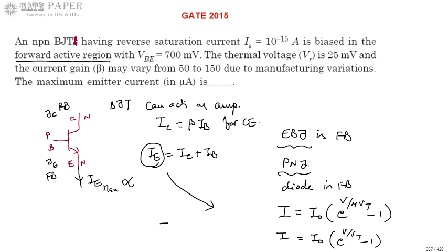This IE value is always less than the current flowing through the emitter-base junction with respect to the diode equation. So this current is treated as maximum emitter current. Now substitute the values: IE equals I0, which is 10^-15.